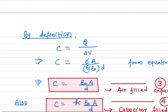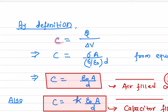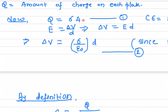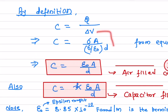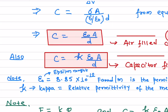By definition, capacitance C is charge per unit applied potential difference. The charge is sigma times A, and delta V is sigma over epsilon naught times d. Substituting these values and simplifying, we get C equals epsilon naught times A over d. So the capacitance is epsilon naught times A divided by d, where A is the area and d is the distance between the plates.